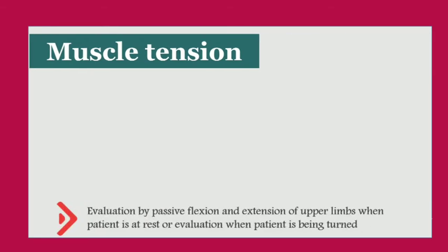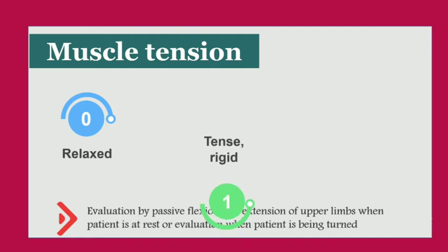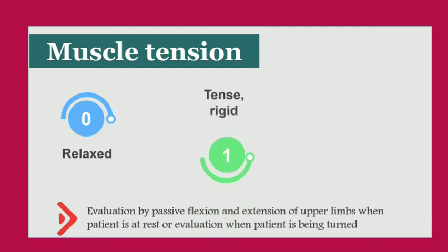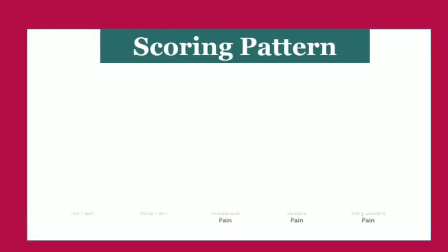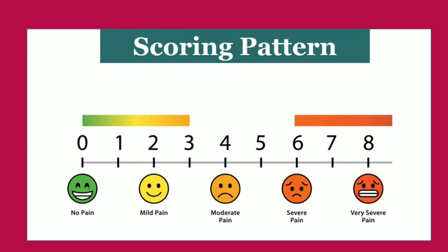The fourth parameter is muscle tension, evaluated by passive flexion and extension of the upper limbs when the patient is at rest or when the patient is being turned. Score zero is given when the patient is relaxed, score one when the patient feels tense and rigid, and score two when the patient feels very tense or more rigid.